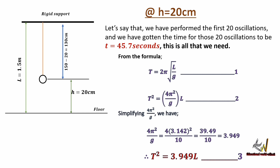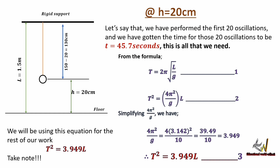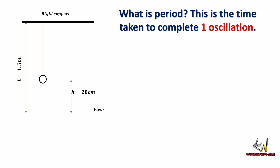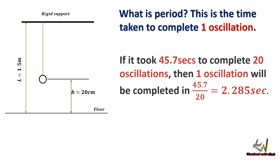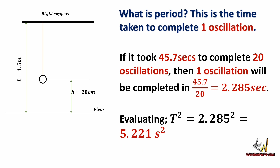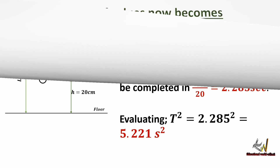Putting it into the equation we have T² = 3.949L, and we'll be using this formula for the rest of our work. A period is the time taken to complete one oscillation. If it took 45.7 seconds to complete 20 oscillations, then one oscillation is completed in 45.7 ÷ 20 = 2.285 seconds. Evaluating for T² gives 5.221 seconds squared.